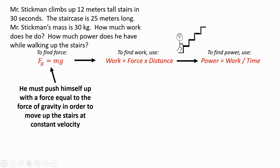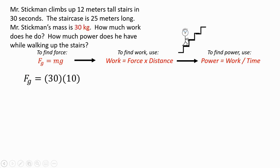So his force will equal mass times gravity because that's how you find the force of gravity. His mass is 30, so 30 times 10 would be 300 newtons. So now that we have the force, we're going to use the equation work is equal to force times distance.